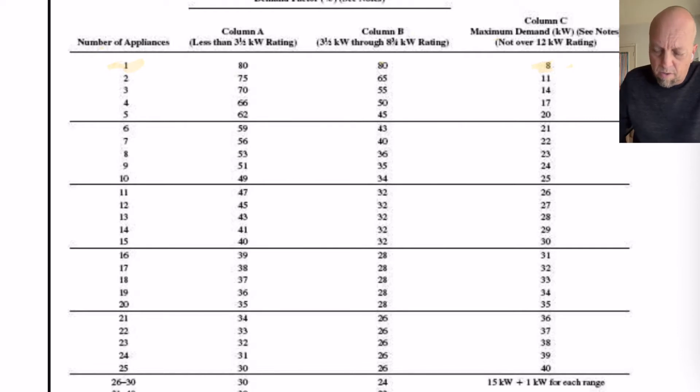Also, if you were to look in columns A and B, take a look at those. Those are your demand factors. So, that means those are multipliers that you will have to use to figure out your loads for those smaller ranges. But column C is already figured out for you. That is the load itself. They've already done all the math for you.